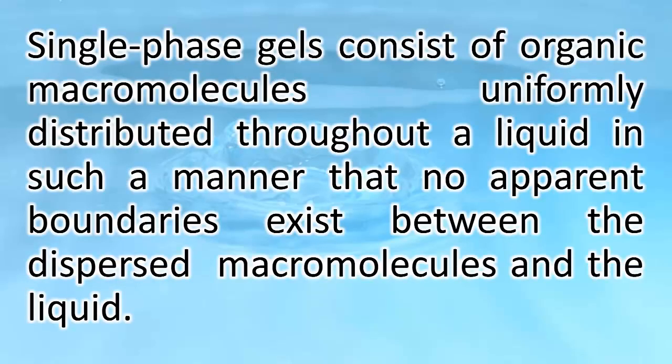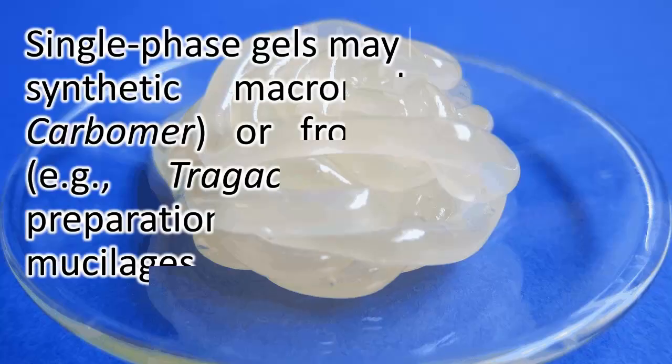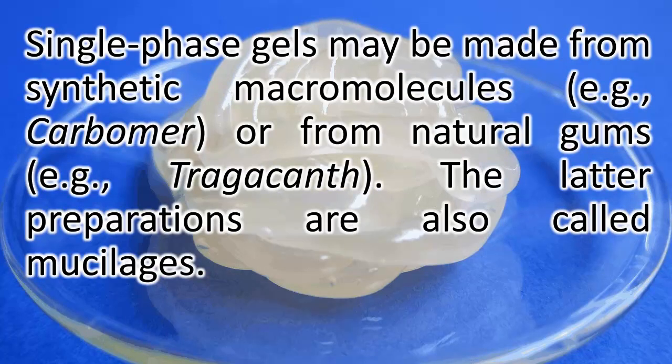Single-phase gels consist of organic macromolecules uniformly distributed throughout a liquid in such a manner that no apparent boundaries exist between the dispersed macromolecules and the liquid. Single-phase gels may be made from synthetic macromolecules, for example, carbomer, or from natural gums, for example, tragacanth. The latter preparations are also called mucilages.